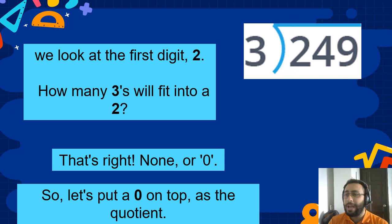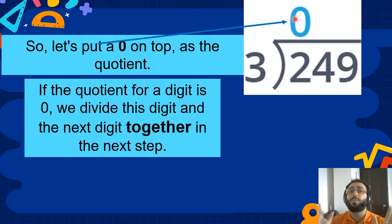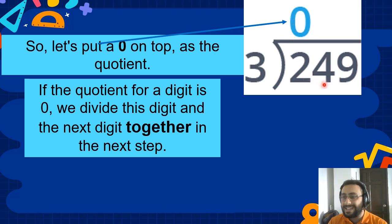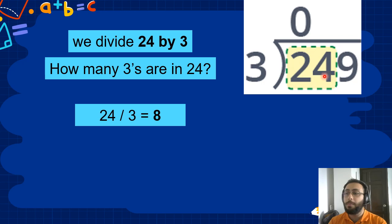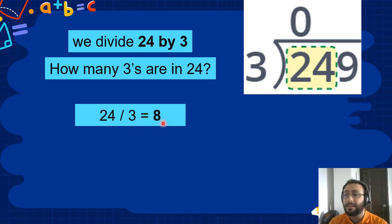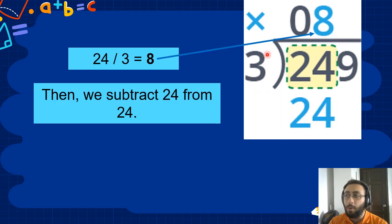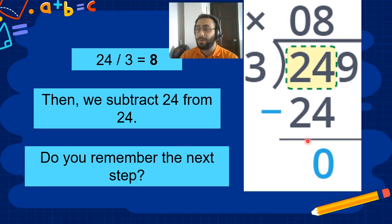So we write 0 up here because we cannot fit any 3's in 2. Now we look at the next digit together, 2 and 4, which is 24. How many 3's fit into 24? 24 divided by 3 equals 8. So 8 threes fit into 24. Now we multiply 8 times 3, which equals 24, and then we subtract and we get 0.